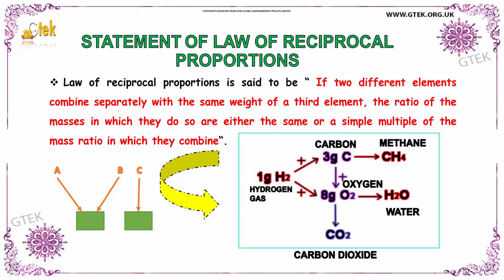Now we will talk about the Law of Reciprocal Proportions. If two different elements combine separately with the same weight of a third element, the ratio of the masses in which they do so are either the same or a simple multiple of the mass ratio in which they combine. That's referred to as the Law of Reciprocal Proportions.